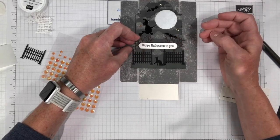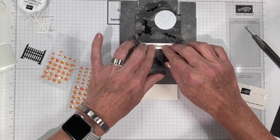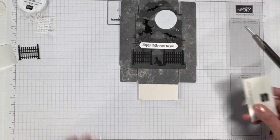And just add your sentiment. I think that's centered. Is that good? It needs to go over a little bit. Here we go. Just put that on there. And then we can build our box.